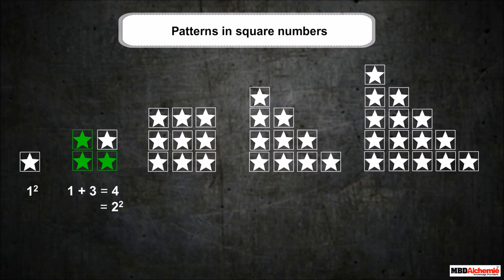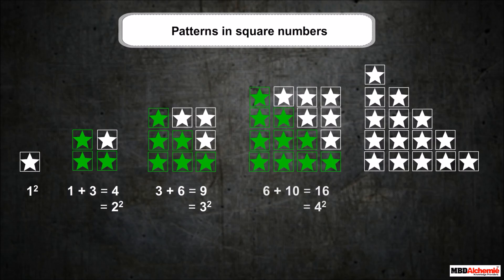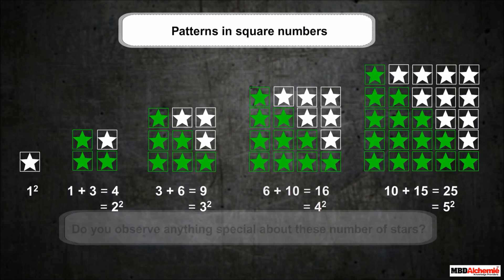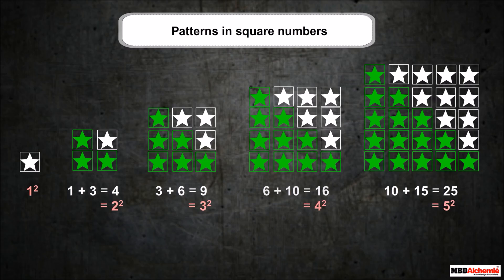Similarly, we add 3 stars to 6 stars and get 9 stars. Then we add 6 stars to the next consecutive triangular number, that is 10 stars, and we get 16 stars. Do you observe anything special about these numbers of stars? We get a square number of stars.